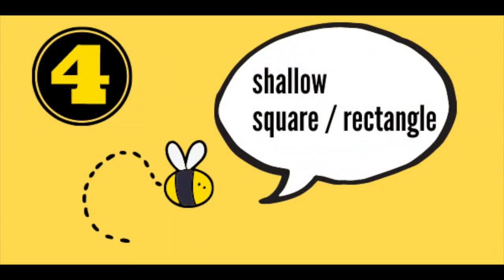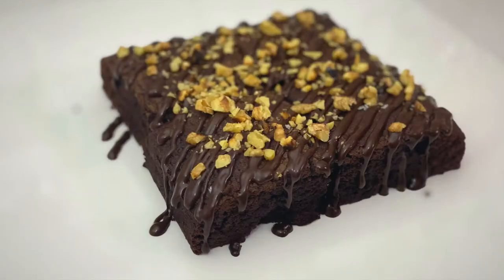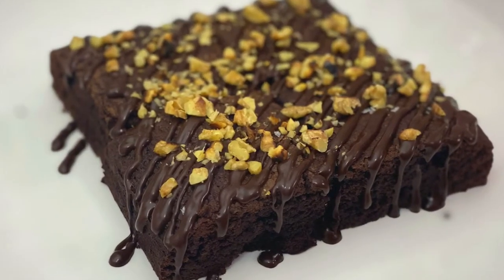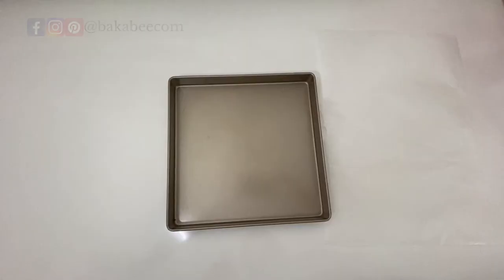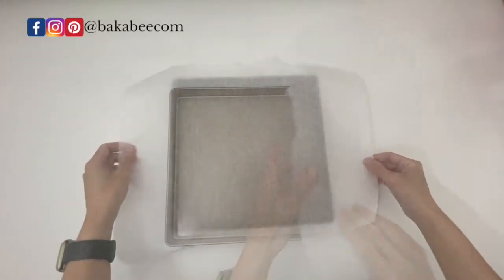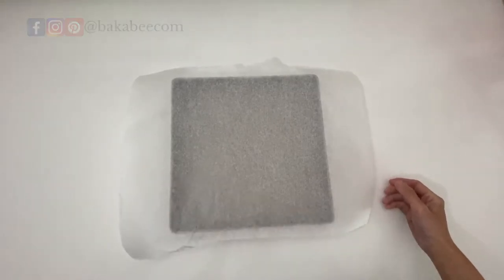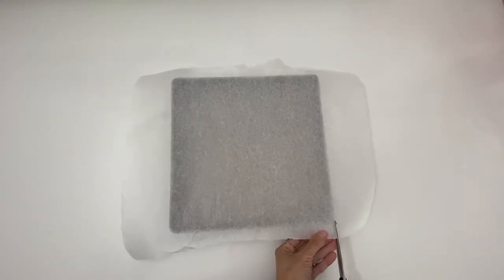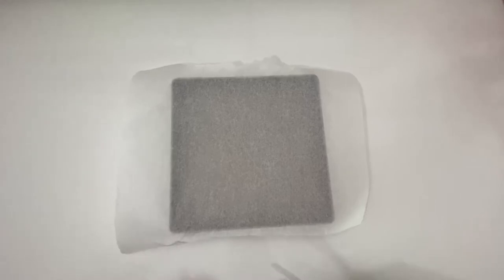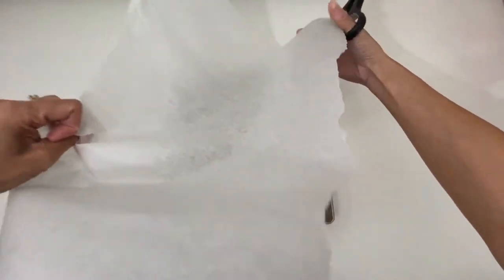Way number four, shallow square or rectangle tins. I use this kind of tin to make brownies or a Swiss roll. They are just perfect. Basically, lining the baking paper into these two shapes of tins is the same. Get a rectangle shape of parchment paper, place it on top of the tin. Cut two lines from the edge of the paper to the corner of the tin, just like this.